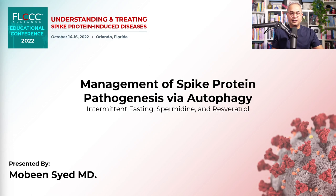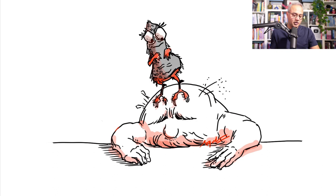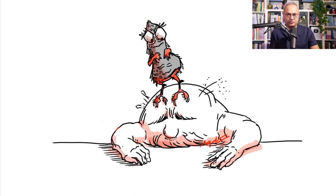Here is the spike protein we're going to talk about. This drawing shows the spike protein standing on top of an endothelial cell which has become damaged. The small grains depict reduction in nitric oxide release, and the small structures here represent increased cell adhesion molecules expressed on a spike-damaged endothelial cell, which would cause inflammation.